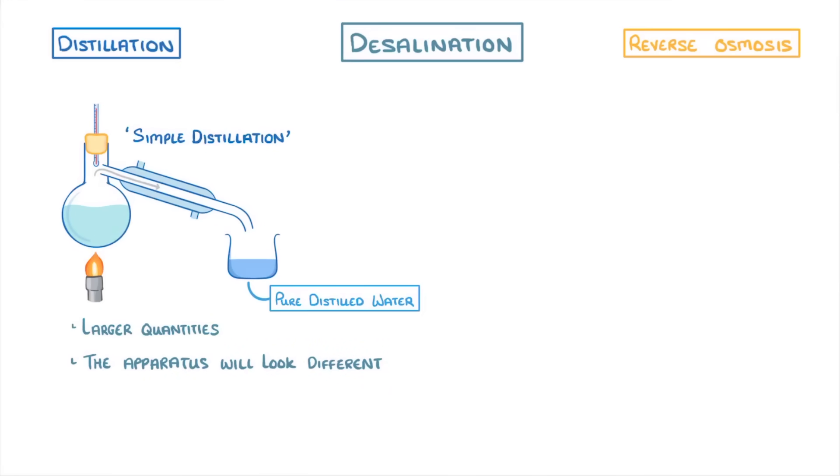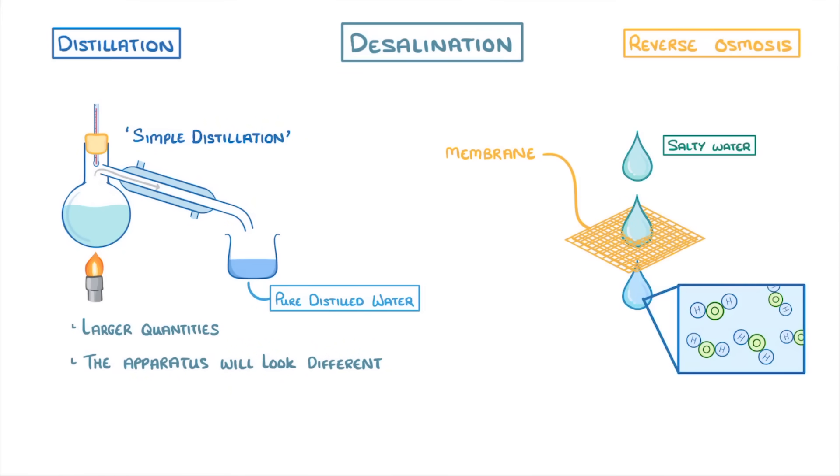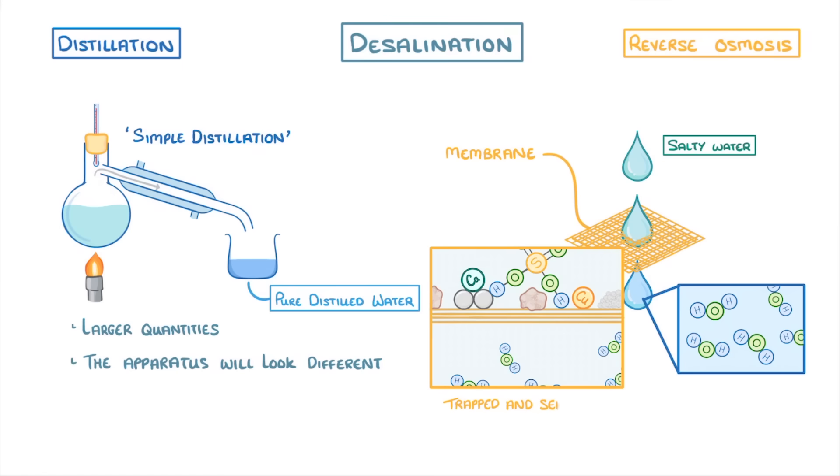On the other hand, in the reverse osmosis technique, the salty water is passed through a membrane which only allows the water molecules to pass through. This means that all of the ions and larger molecules get trapped and so separated from the water. So again we end up with pure distilled water.